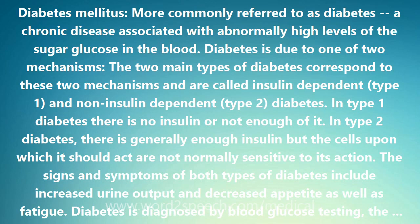Diabetes is due to one of two mechanisms. The two main types of diabetes correspond to these two mechanisms and are called insulin dependent, type 1, and non-insulin dependent, type 2, diabetes.